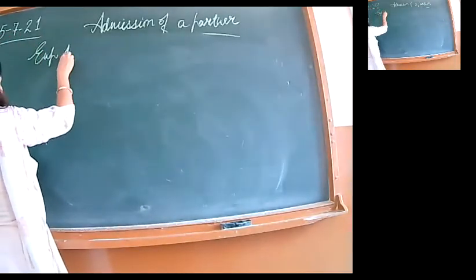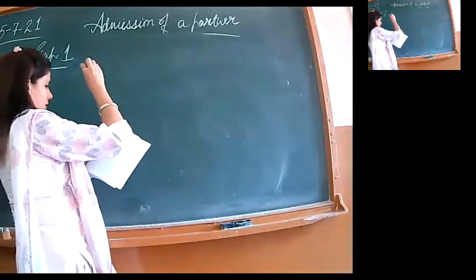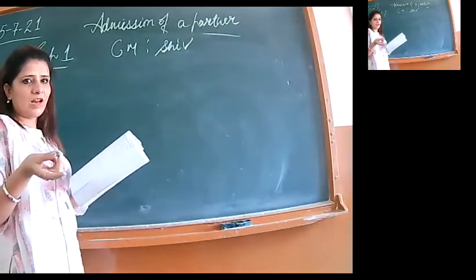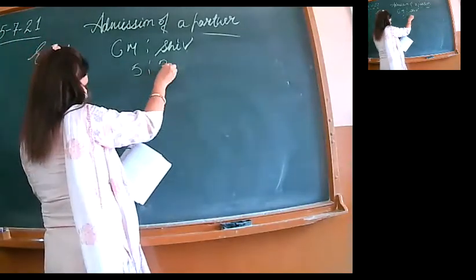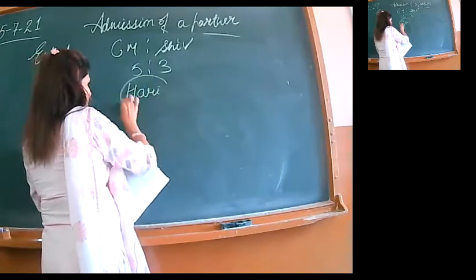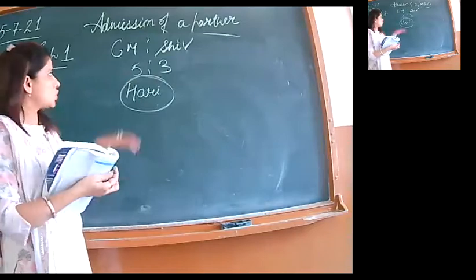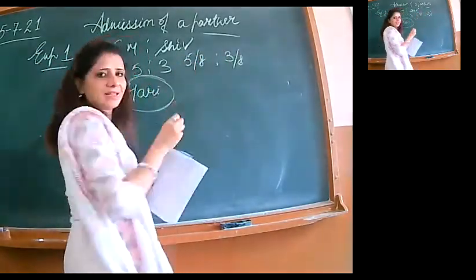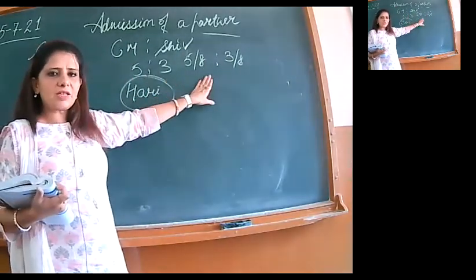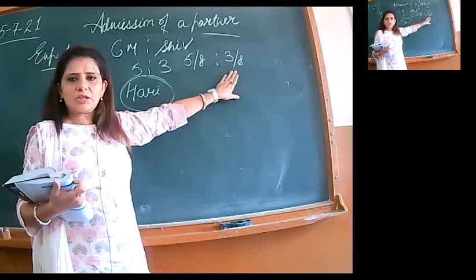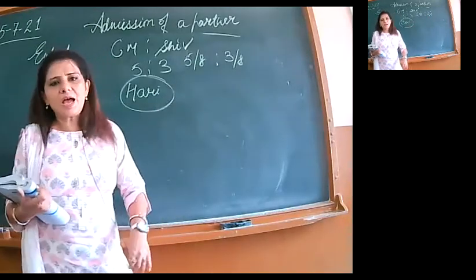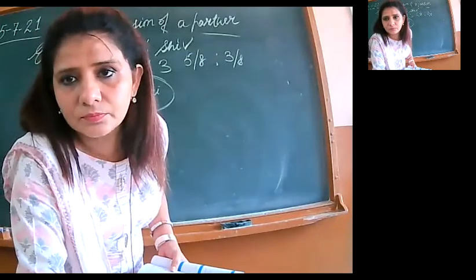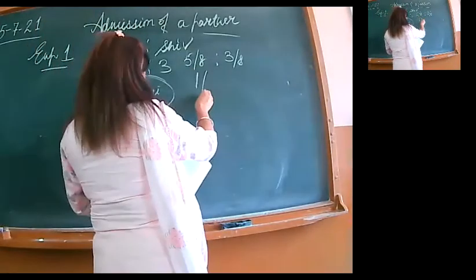So first topic of the chapter, we are going to start, that is sacrificing ratio. At the time of admission, whenever the question comes in 8 marks, it will not say sacrificing ratio, this is always your first step. Whenever you have a question of admission, you will start with sacrificing ratio first. Example number one: Om and Shiv are two partners. Om's ratio is 5 by 8, Shiv's ratio is 3 by 8. Hari is coming for one-fourth share. New ratio is question mark.